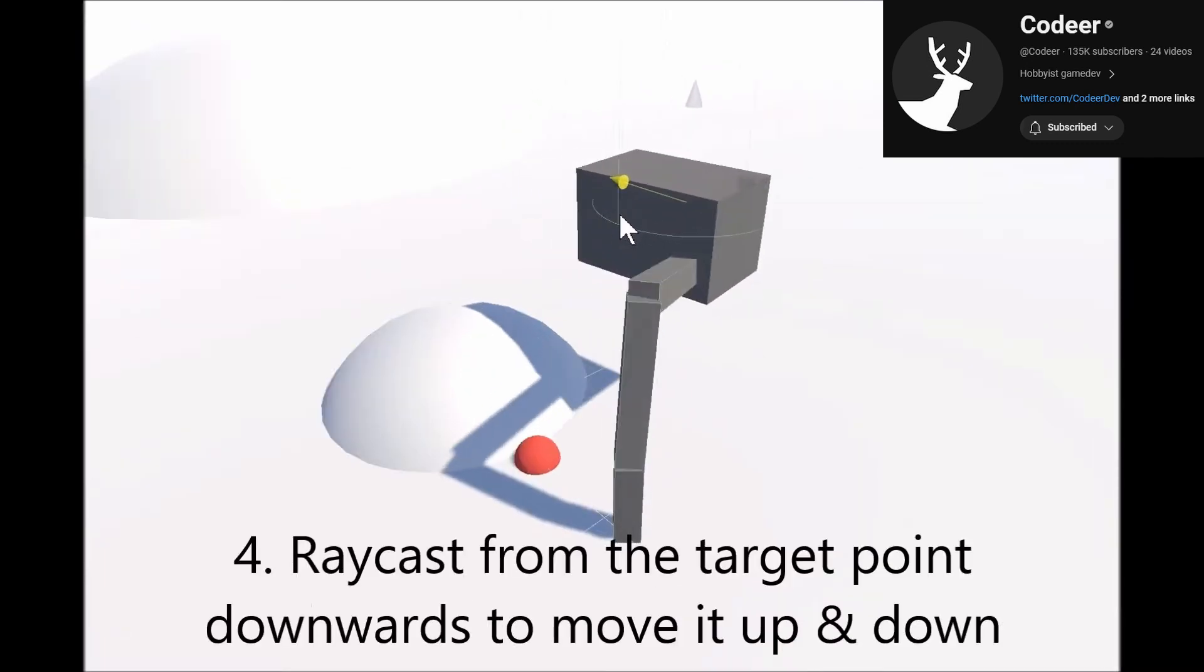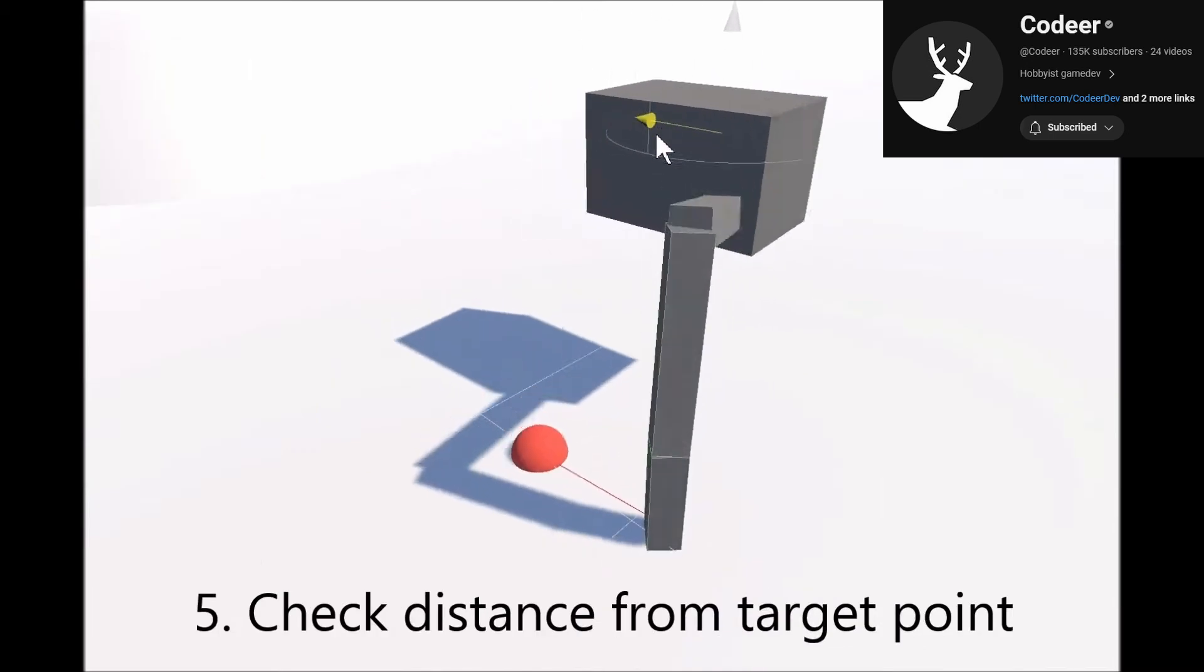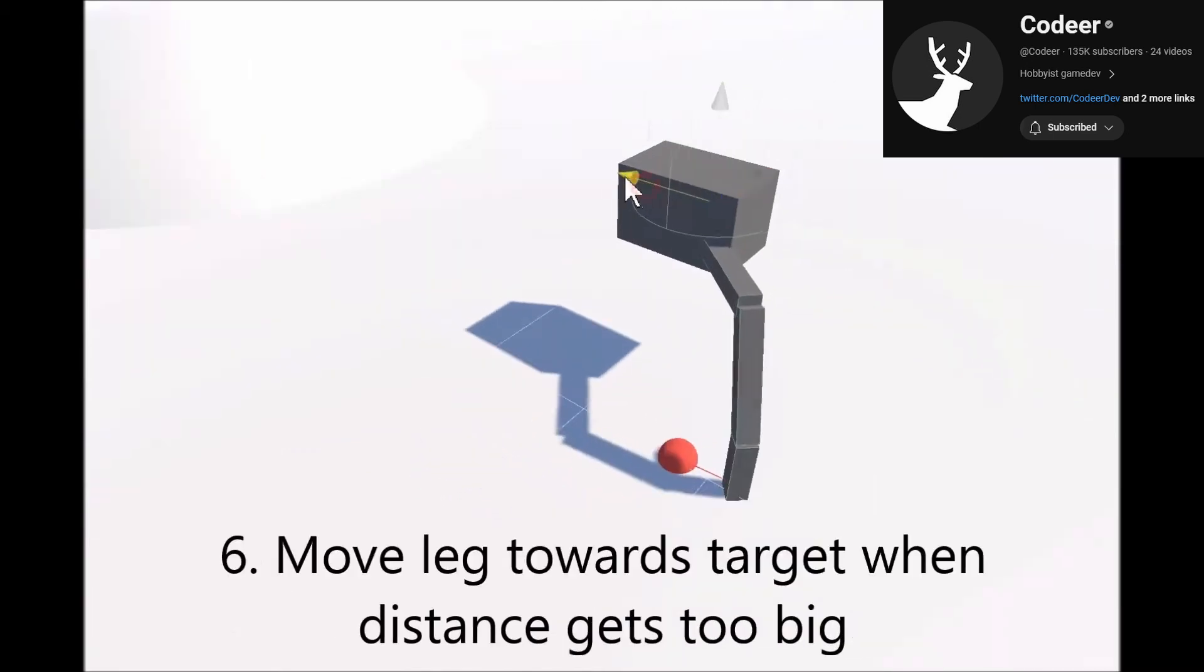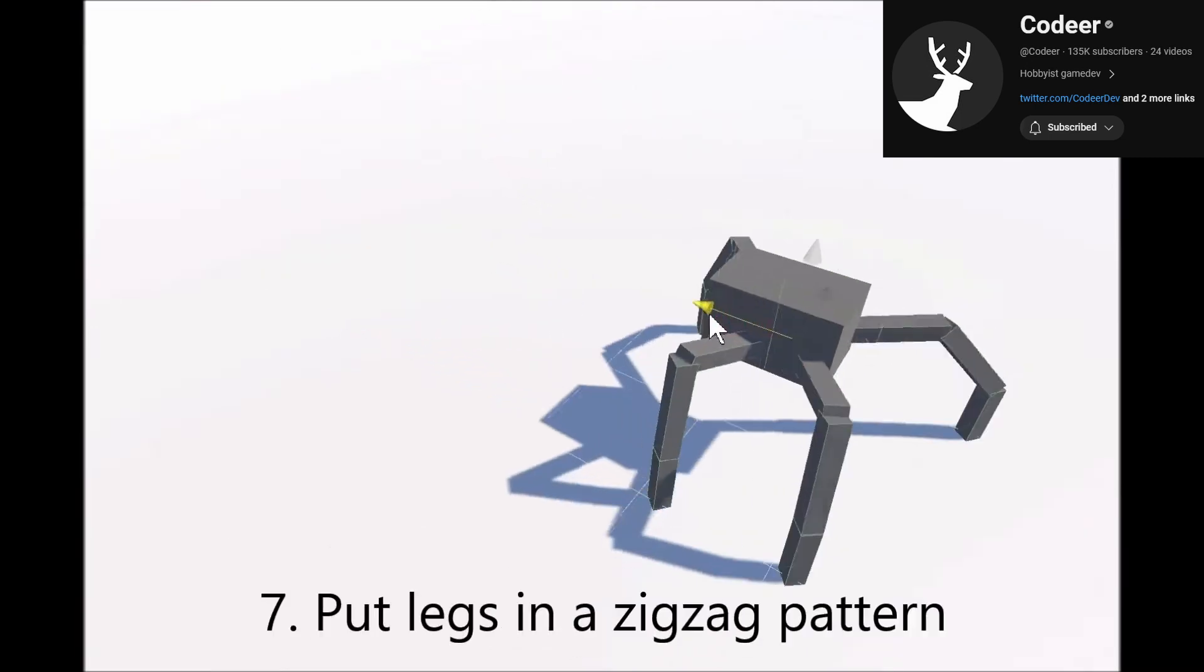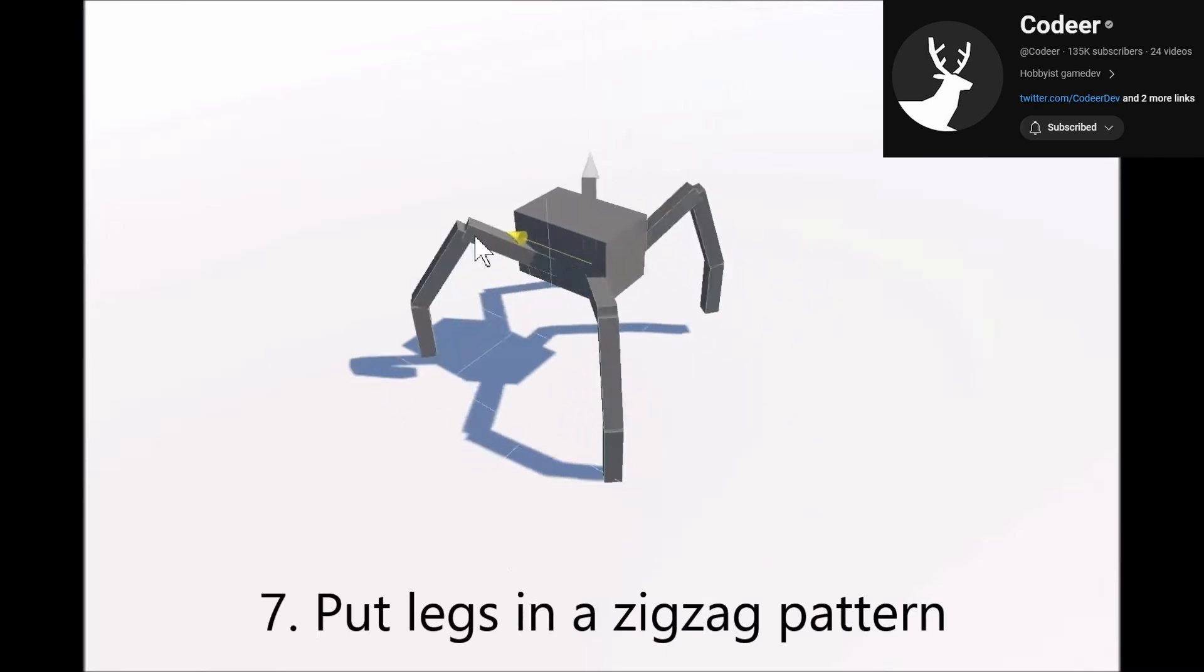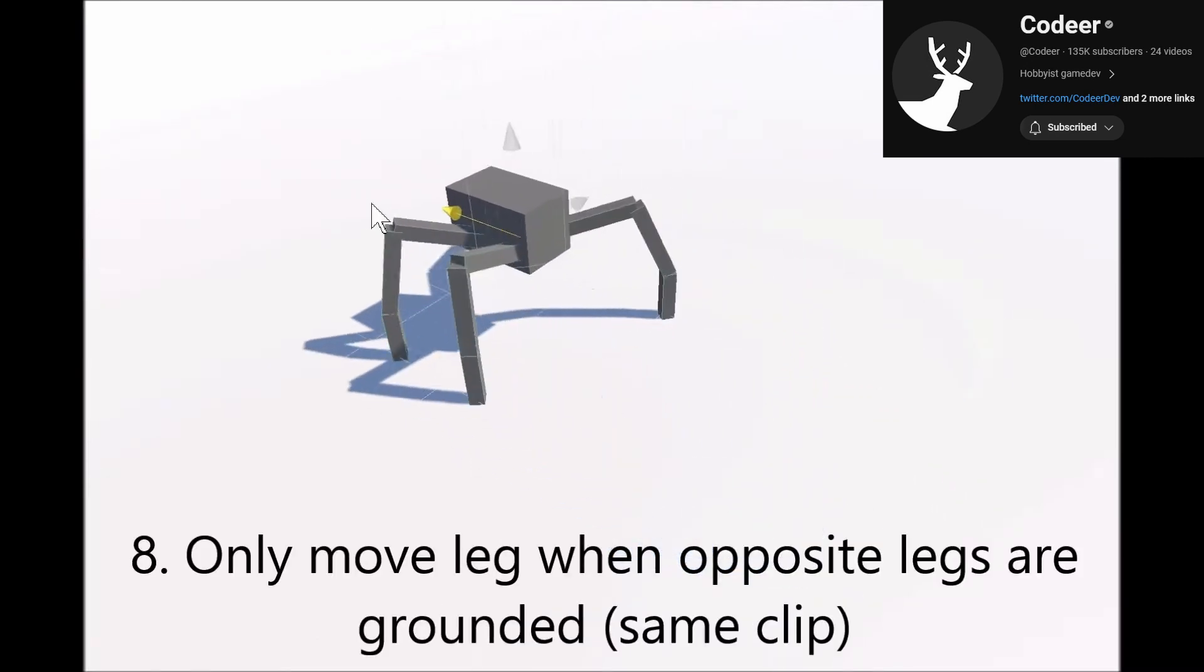Raycast down from the target point and move it up or down to the hit location, and then check your distance from the foot to the target point. When this distance passes a threshold, move the leg towards the target point. Depending on the walking pattern, you can define left and right legs and have them walk in opposite motion by only moving the leg when the opposite leg is grounded.